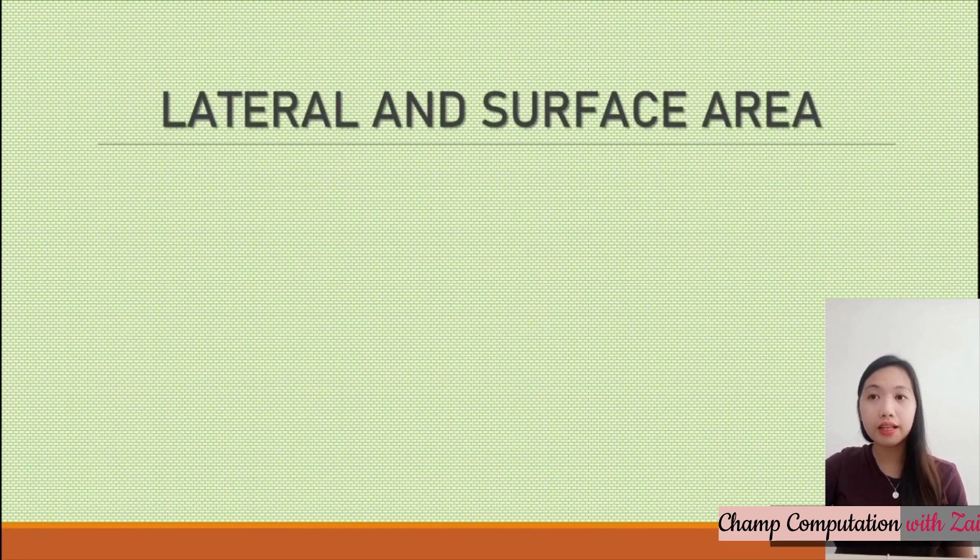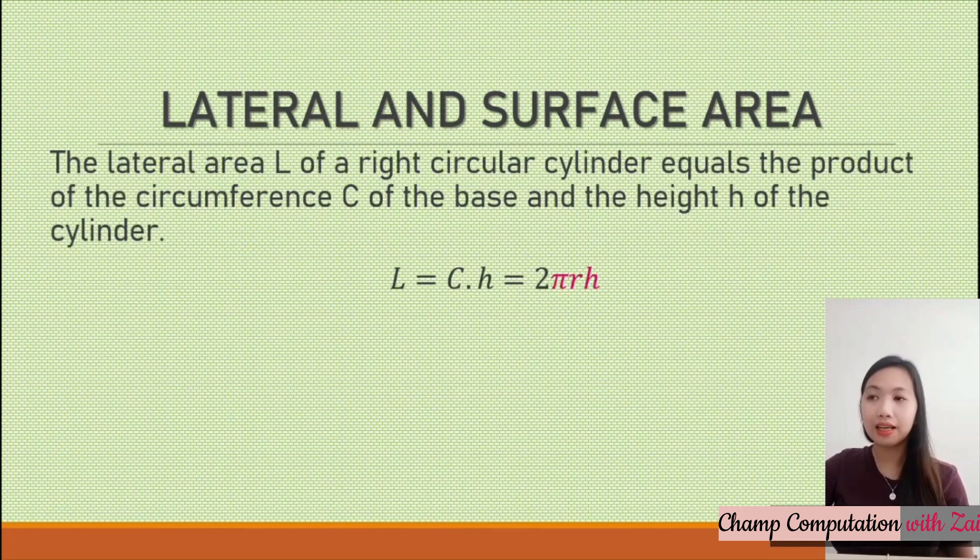The lateral and surface area of a cylinder can be computed as follows. The lateral area of a right circular cylinder equals the product of the circumference of the base and the height of the cylinder. In symbols, we have the lateral area as the circumference multiplied by height. When we derive this formula, circumference can be computed as 2πr, multiplied by h. So the lateral area will be 2πrh.